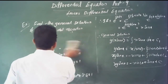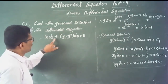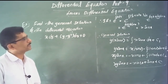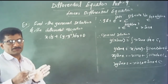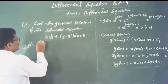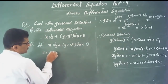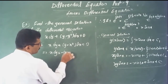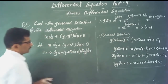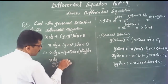One more: find the general solution of x dy plus (y minus x squared) dx equals 0. Rewriting: x dy equals (x squared minus y) dx, which gives dy/dx equals (x squared minus y)/x. Rearranging: dy/dx equals x minus y/x.